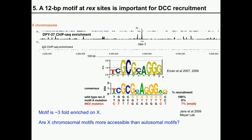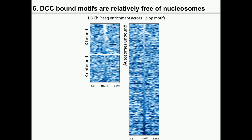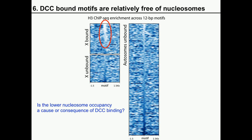We asked whether the X-chromosomal motifs are more accessible than the autosomal motifs, which might increase the specificity of DCC recruitment to the X. Histone H3 ChIP-seq enrichment across the motifs shows that bound motifs on the X-chromosome indeed have a more accessible chromatin structure around them compared to unbound motifs on the X-chromosome or unbound motifs on the autosomes. However, this experiment doesn't tell you if the open chromatin around motifs is a cause or a consequence of dosage compensation complex binding.